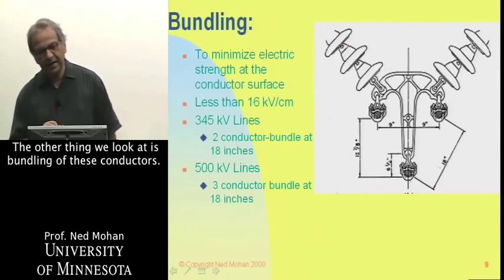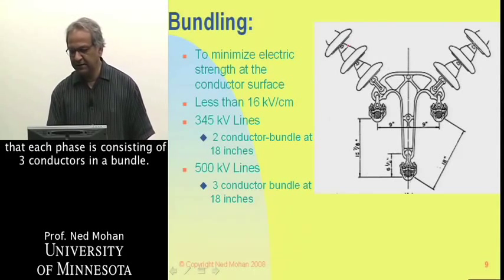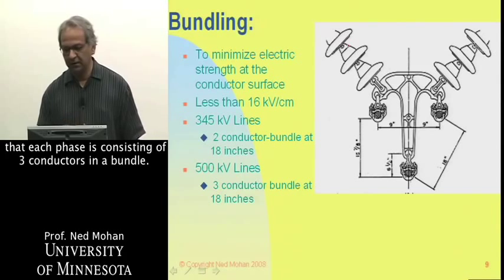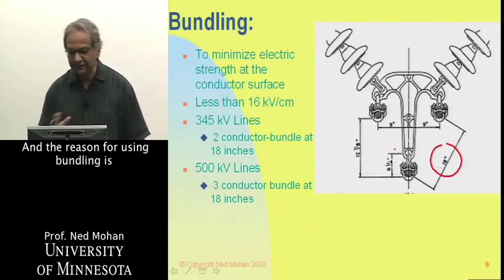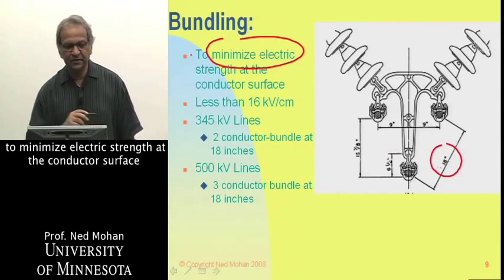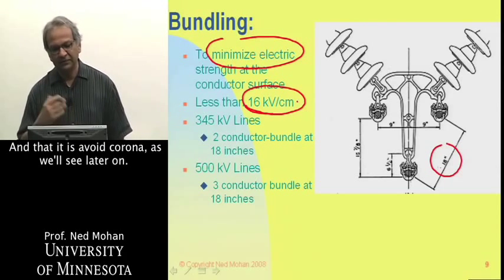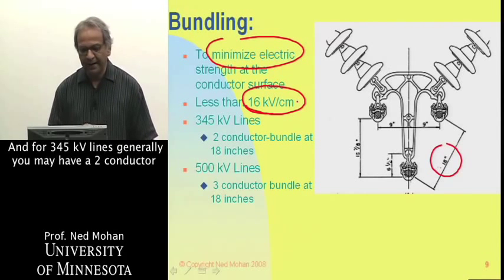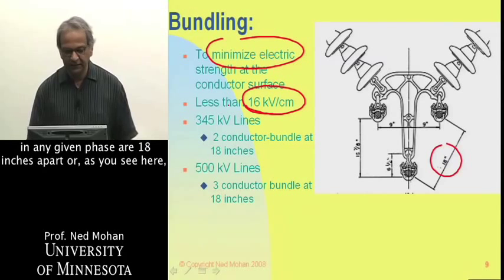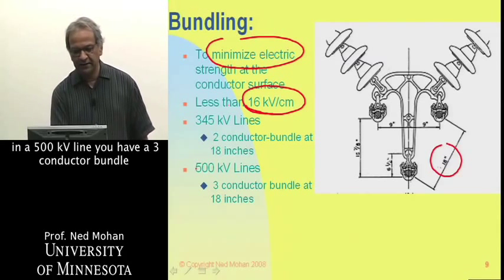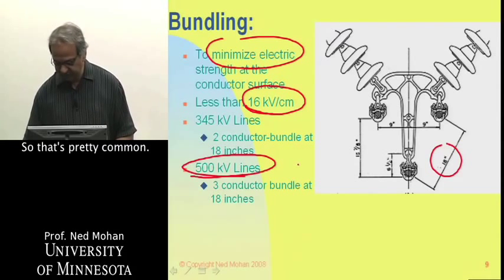The other thing we'll look at is bundling of conductors. In this 500 kV line, each phase consists of three conductors in a bundle, approximately 18 inches apart in a triangular configuration. The reason for bundling is to minimize the electric field strength at the conductor surface to less than about 16 kV per centimeter, in order to avoid corona. For 345 kV lines, a two-conductor bundle is typically used with conductors 18 inches apart, while a 500 kV line uses a three-conductor bundle.